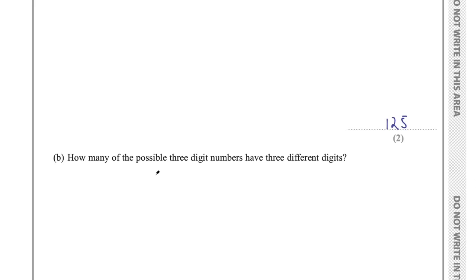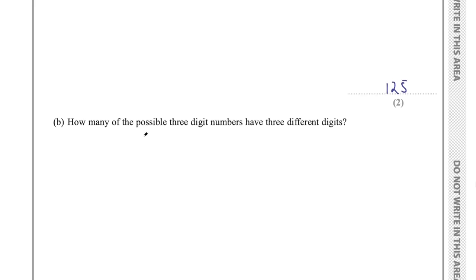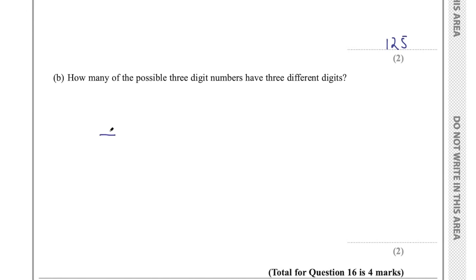Part B asks how many of those 3-digit numbers have 3 different digits. In the first space there are 5 possibilities. In the second space, since one digit is already used, there are only 4 possibilities. In the third space, with 2 digits used, only 3 choices remain. Using the product rule: 5 times 4 times 3 equals 60. Final answer: 60 for part B. That was question 16 for 4 marks.